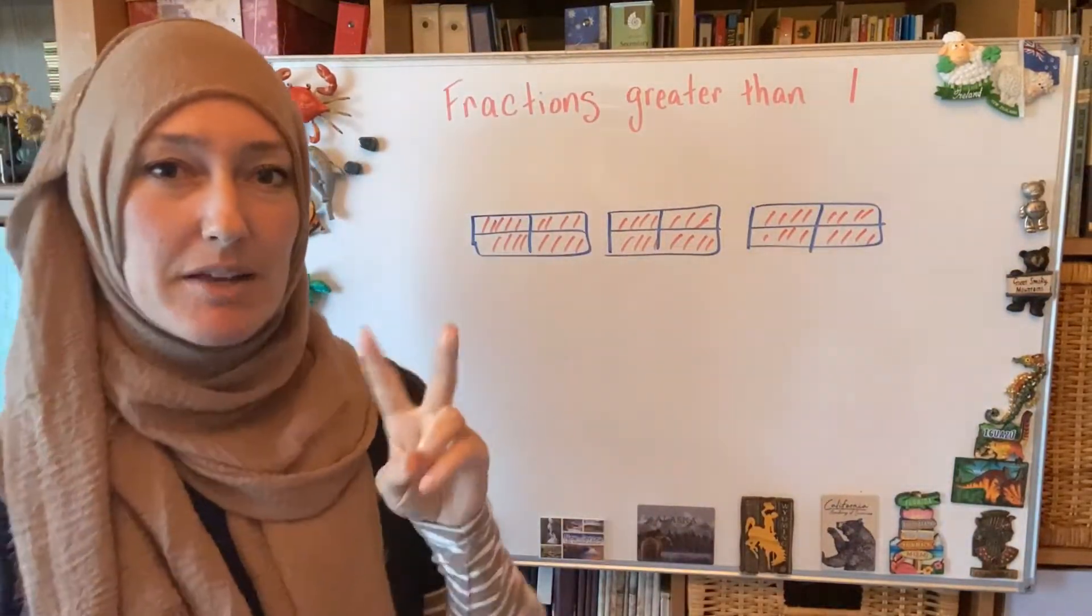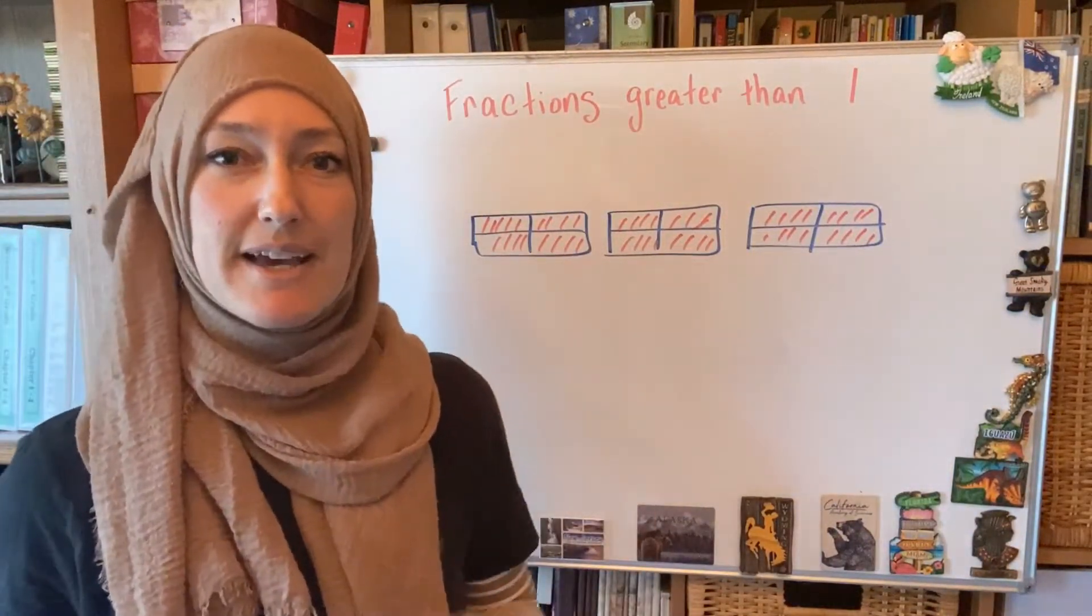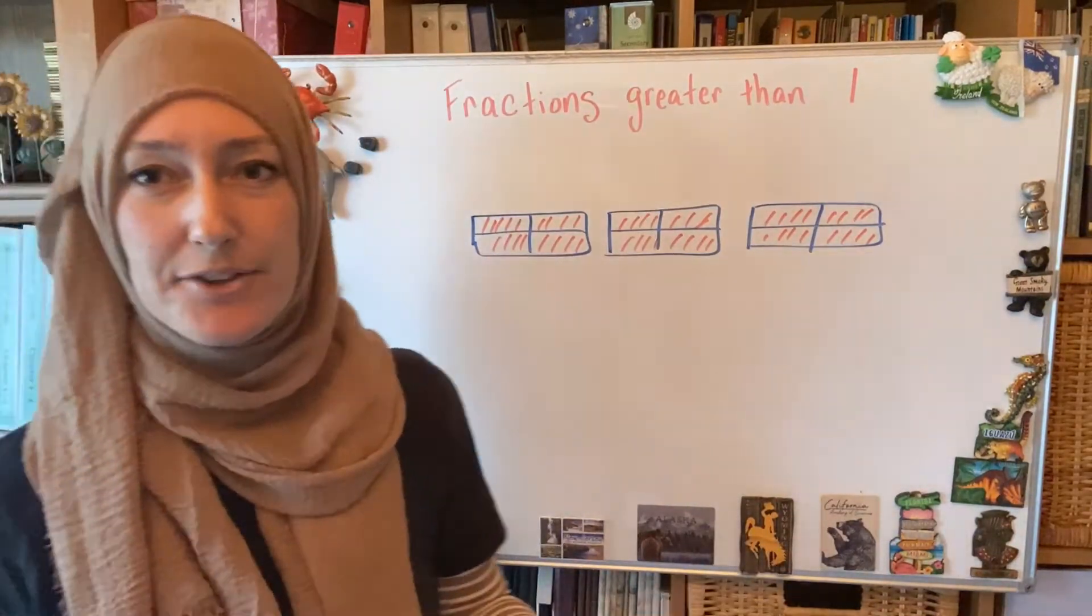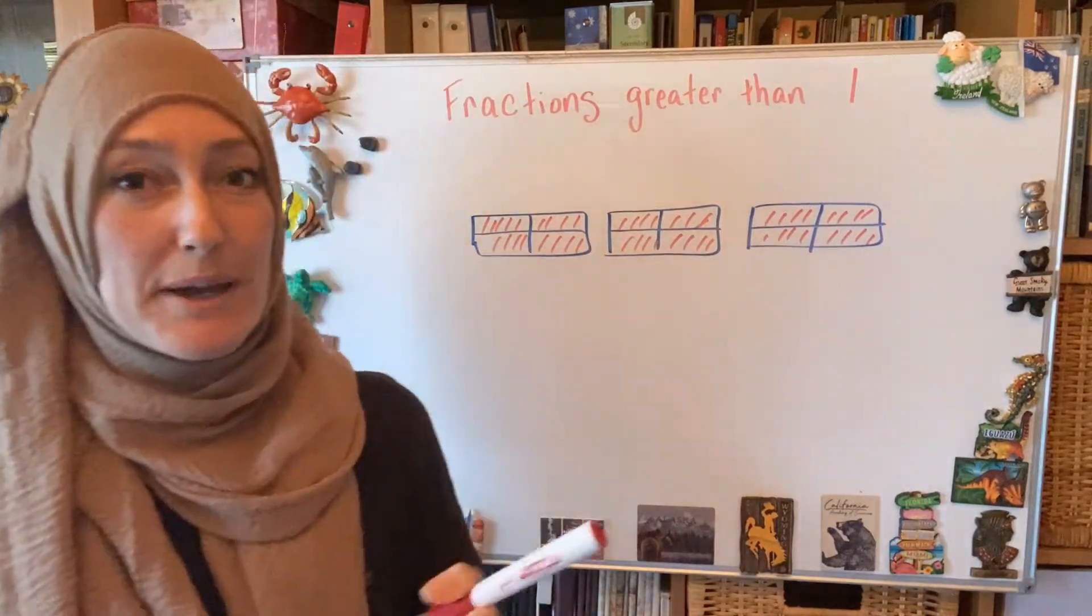If I want to name this fraction, I'm going to name it in two different ways. One way is as a fraction greater than 1, or otherwise known as an improper fraction, and the other way is as a whole number or a mixed number.